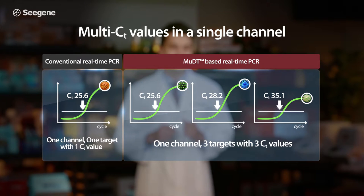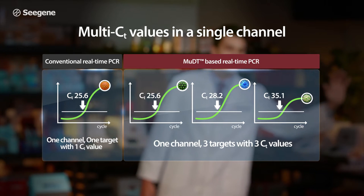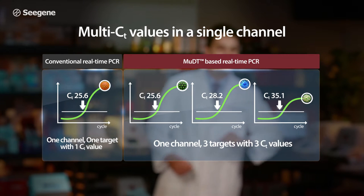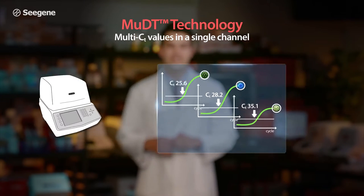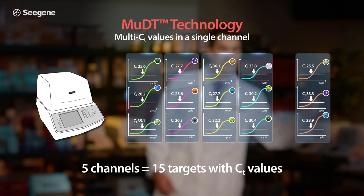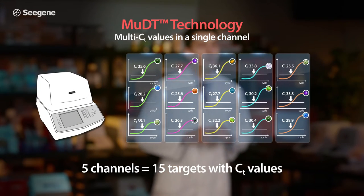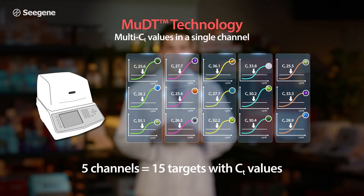This is MUDT technology's advantage. Using MUDT, a standard five-channel system can detect 15 targets and their associated CT values.